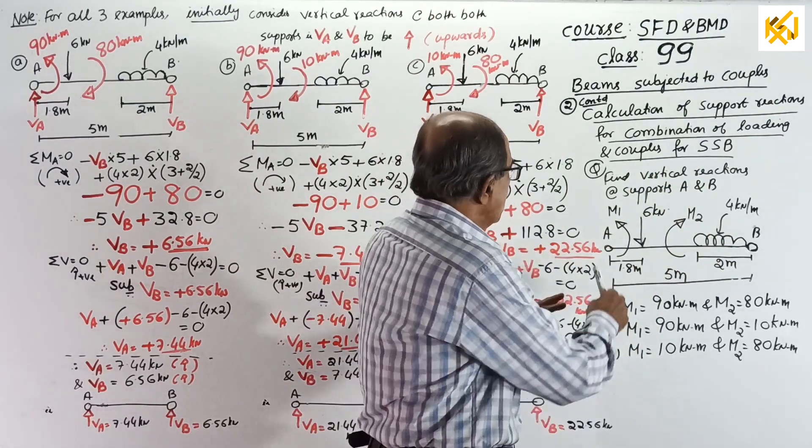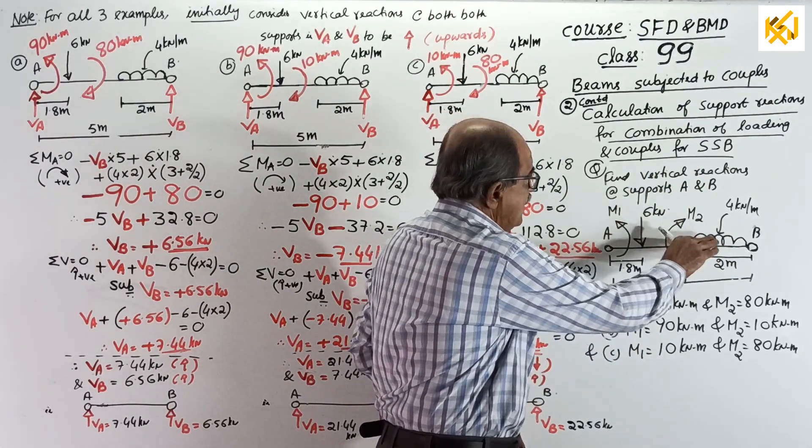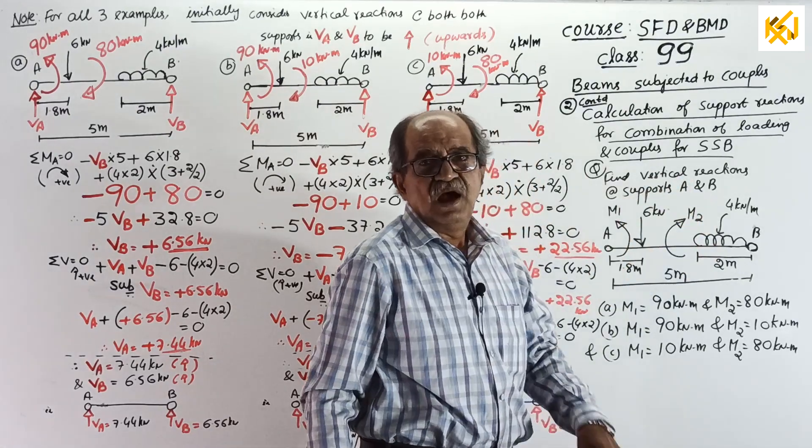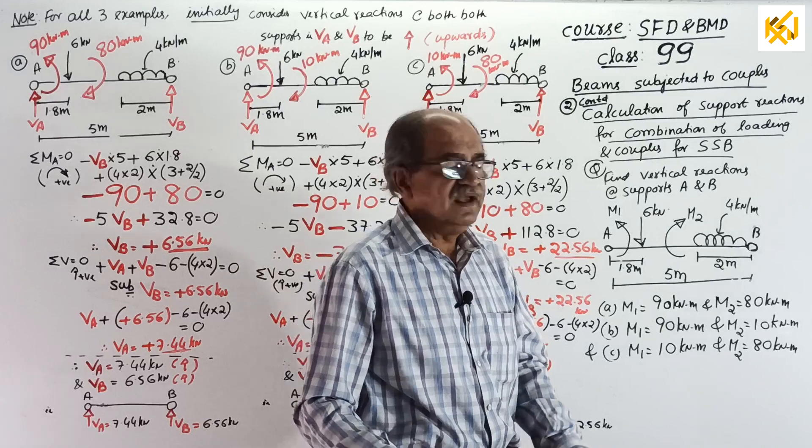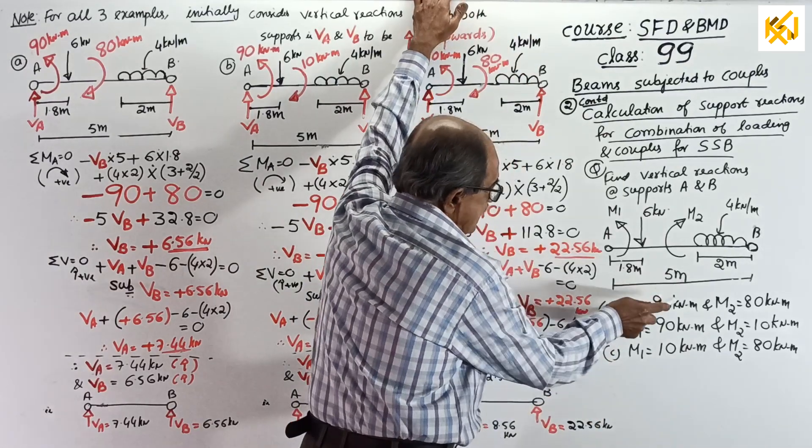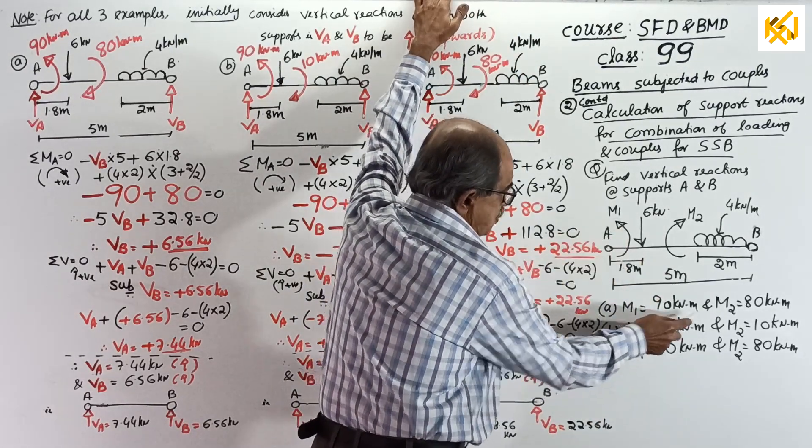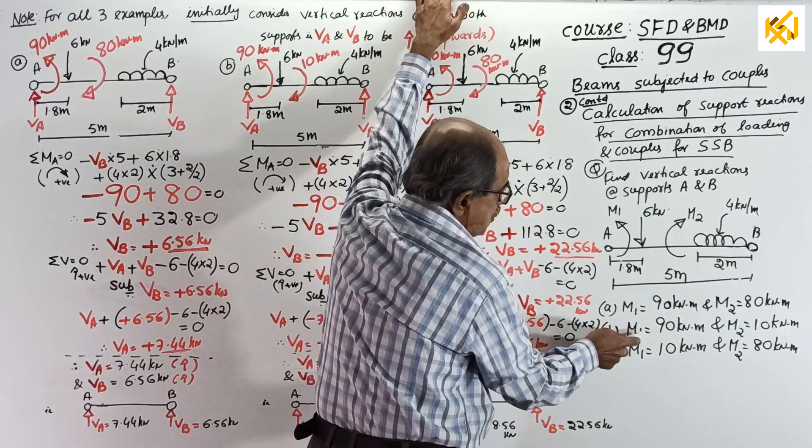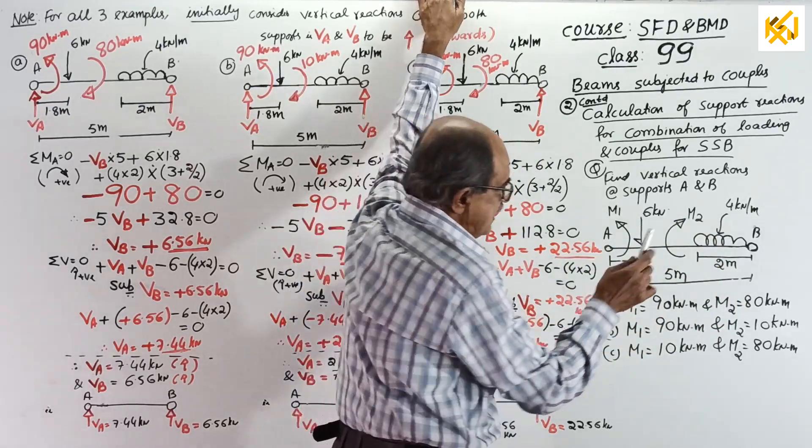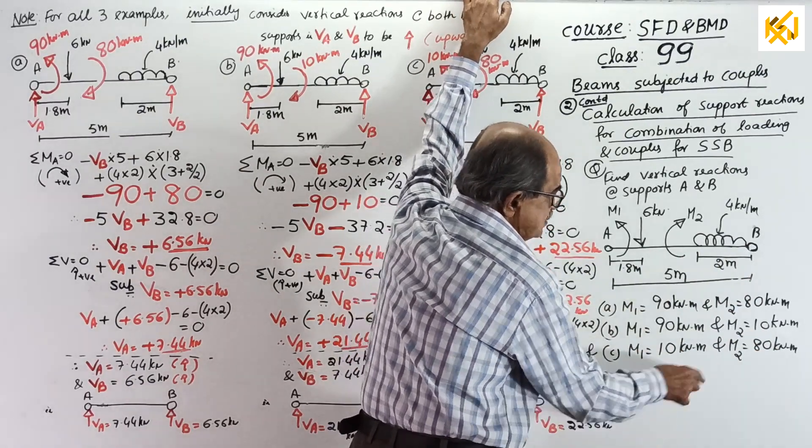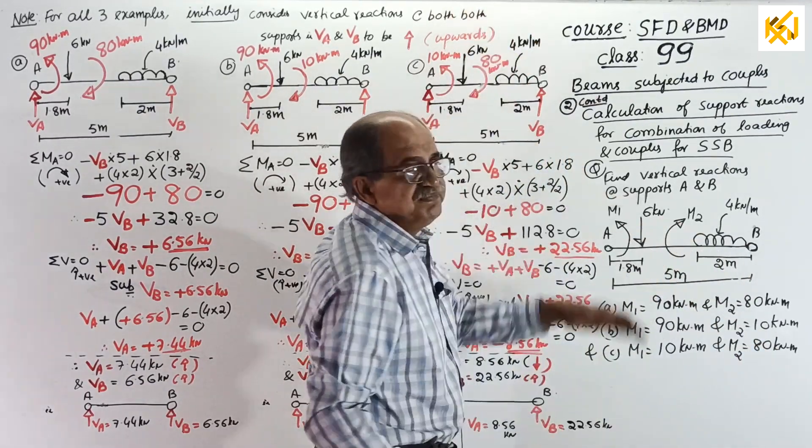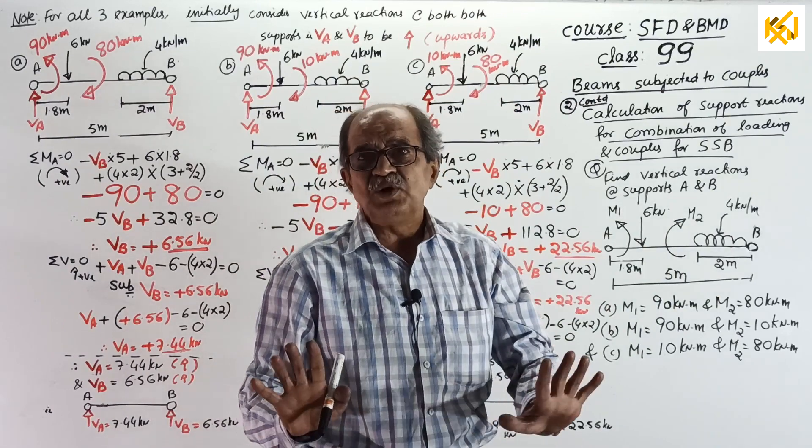Now, two couples, one anti-clockwise M1, one clockwise M2. I will go for three examples. Reason, reason you can make out later. Example 1, M1 is 90, M2 is 80. Example 2, M1 is 90, maintained same. M2 I reduced. Example 3, M1 I reduced, M2 I maintained same. So, you work out three questions.